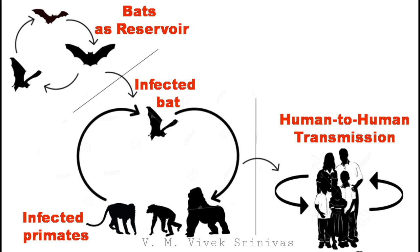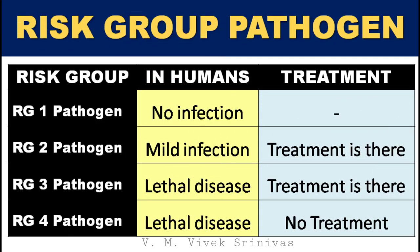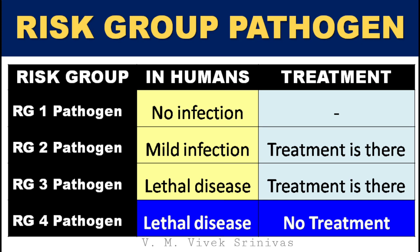Human-to-human transmission is the predominant cause of the epidemic among the human population. As per WHO, pathogens are classified based on their risk to humans — risk group 1, risk group 2, risk group 3, and risk group 4. In the Ebola and Marburg case, the virus causes serious infection in humans and treatment is also not promisingly helpful. So they are grouped under risk group 4 pathogens.